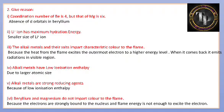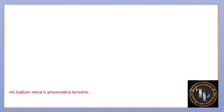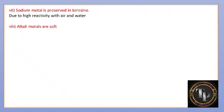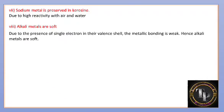Sodium metal is preserved in kerosene because sodium reacts vigorously with air and water, therefore it is kept in kerosene. Alkali metals are soft due to the presence of a single electron in their valence shell — the metallic bonding is weak, hence alkali metals are soft.